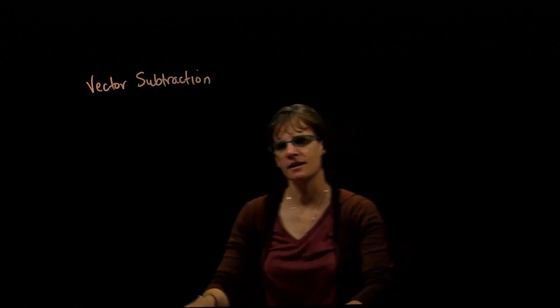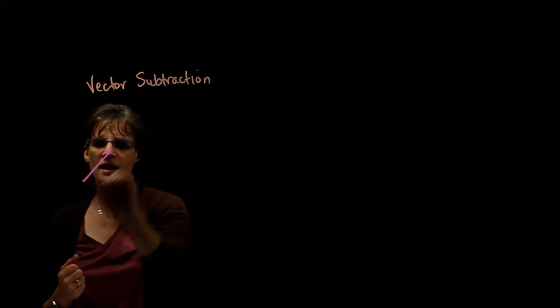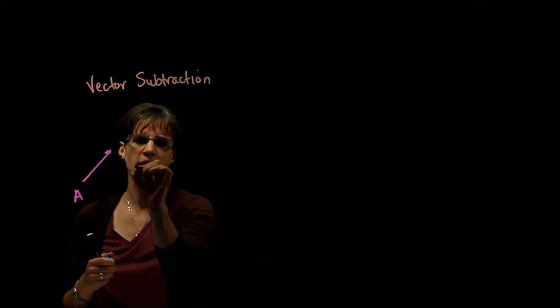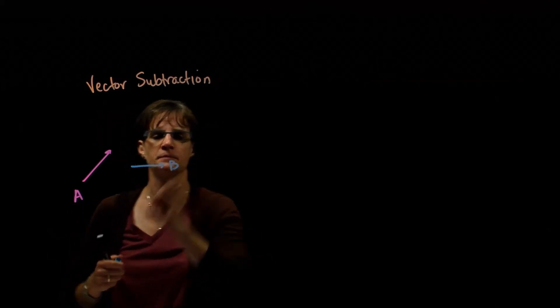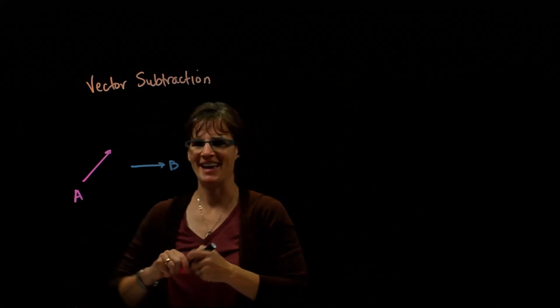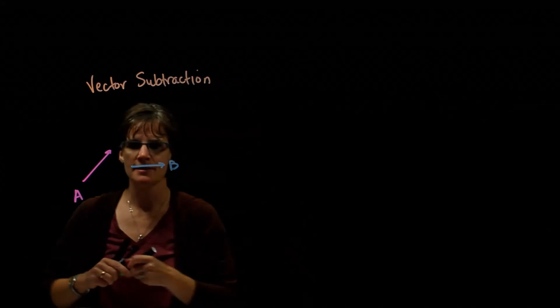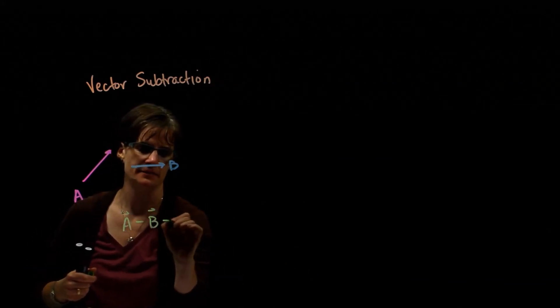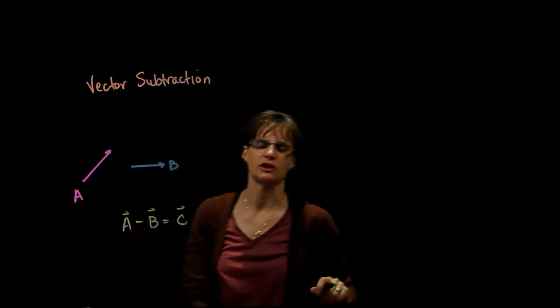So this is the idea that I have two vectors. Let's say I have vector A and vector B. I have vector A and vector B, and I'm interested in looking at the resultant vector A minus B. We're going to call that vector C.